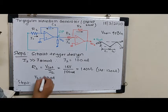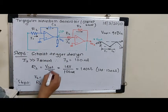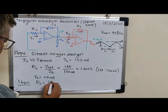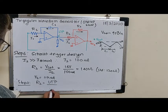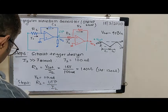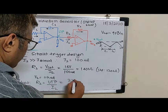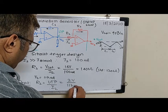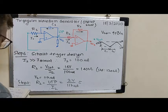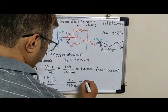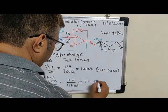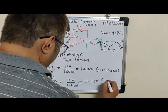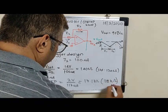R2. Now we have seen the design of the Schmitt Trigger. So R2 happens to be UTP by I2. Simple. This turns out to be 2 volts divided by 117 microampere. This gives me 17.1 kilo ohms. We have to use, let us say, standard 18 kilo ohms resistor.